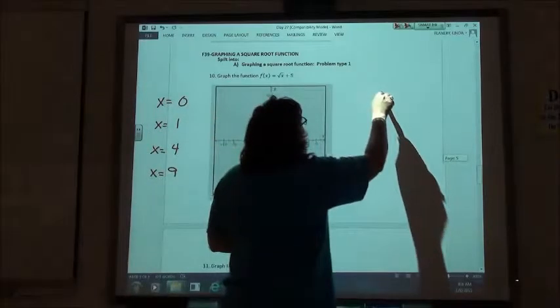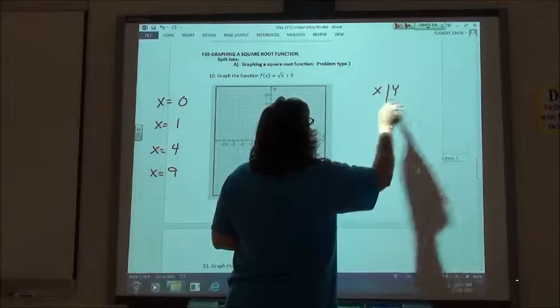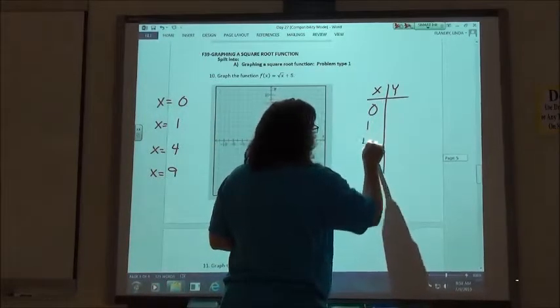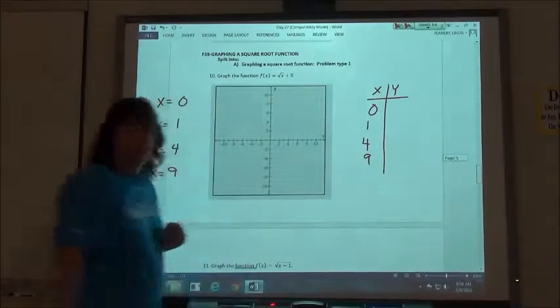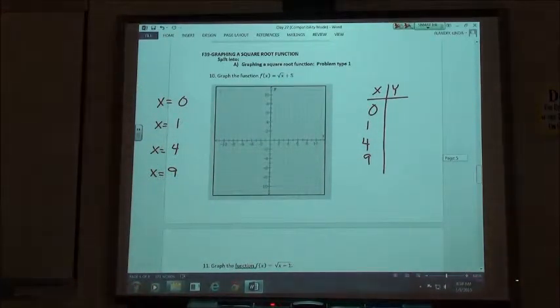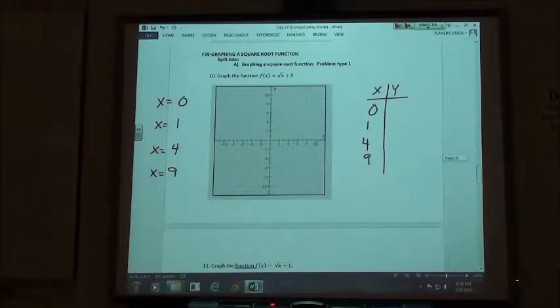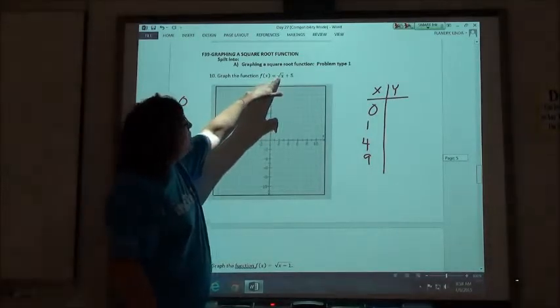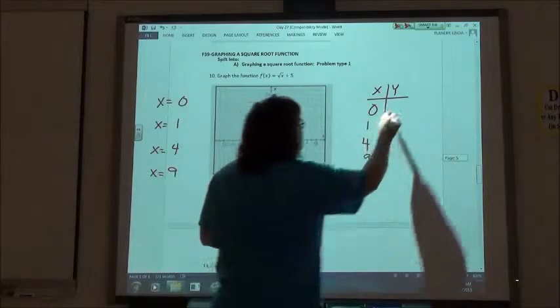So when I make my table, I'm going to use 0, 1, 4, and 9 so that my values all come out nice because I can do the square root of all of those numbers. So square root of 0 is 0, 0 plus 5 gives me 5.